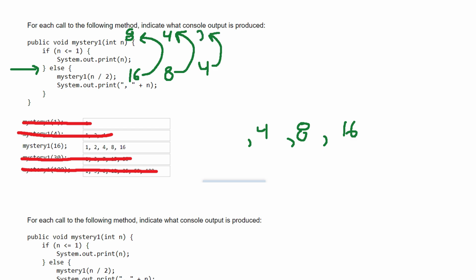So we're going to get two — our number is two — we output that with a comma in front of it. Then because of recursion, we put it back into the method, dividing it by two, which yields one. Then we hop into our if statement, and it's just going to be one. That is our entire answer: one, two, four, eight, 16.